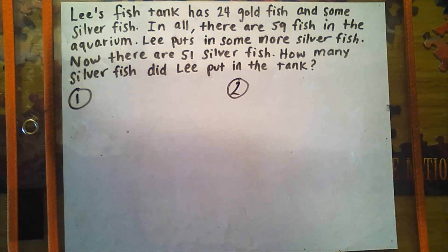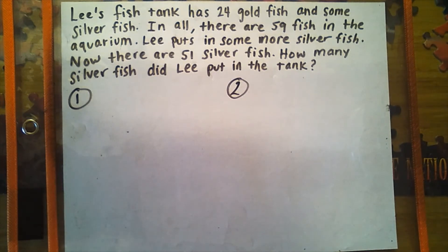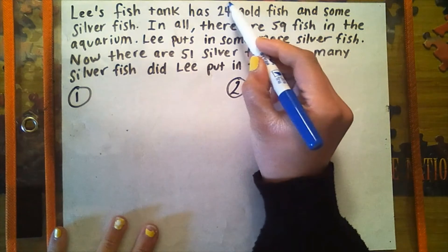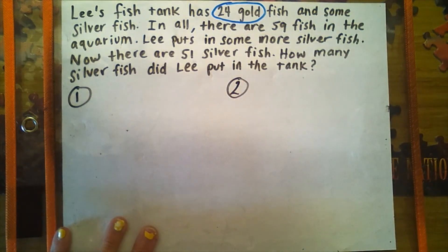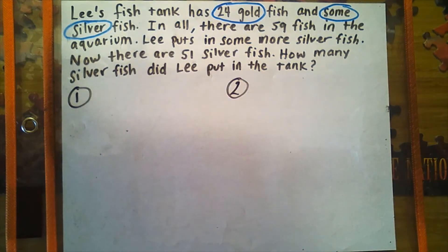Alright friends and families, welcome to the last part of our teacher model, which is using our skills to practice with a word problem. You may read with me or in your head as I read out loud. Lee's fish tank has 24 goldfish and some silver fish. In all, there are 59 fish in the aquarium. Lee puts in some more silver fish. Now there are 51 silver fish. How many silver fish did Lee put in the tank? Great mathematicians always go back and reread the problem so we know exactly what we're solving for and can find and circle important numbers. We're going to circle 'some' and 'silver' because that's pretty important.